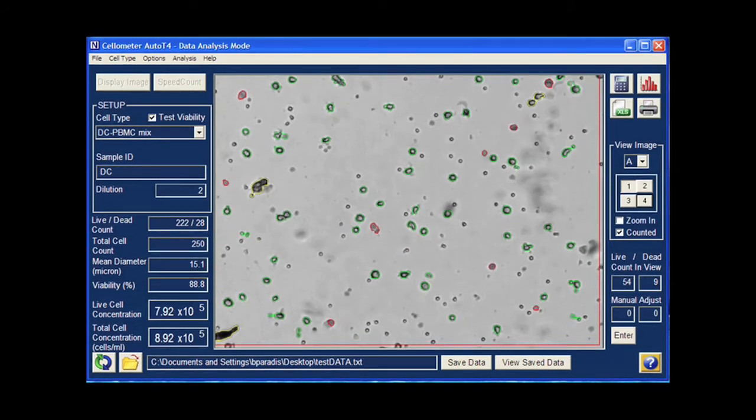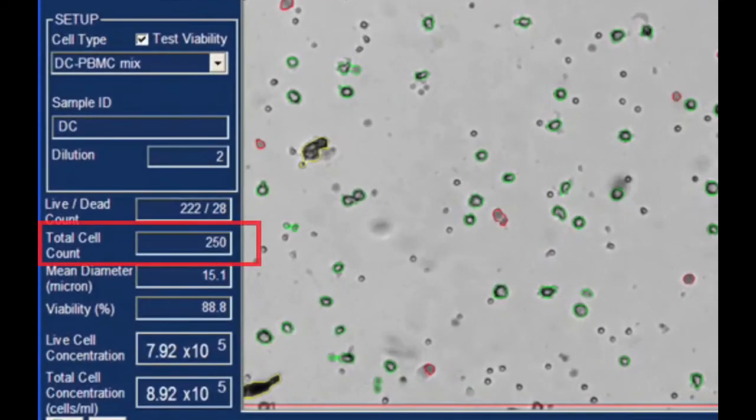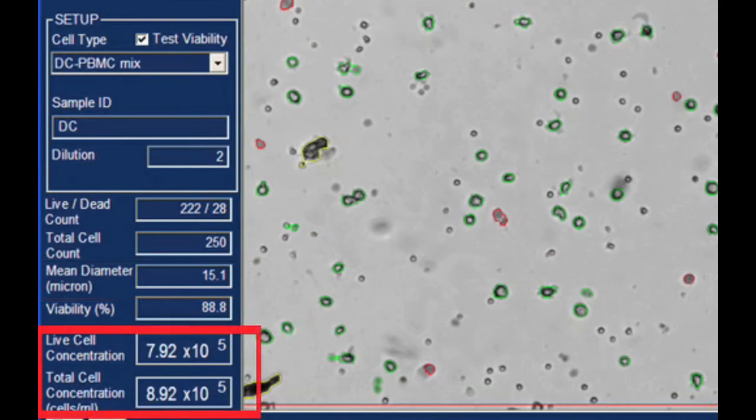When cell imaging and counting is complete, the initial results table displays total cells counted, mean cell diameter, concentration, and percent viability. Imaging and calculations are completed in less than 30 seconds for each sample.